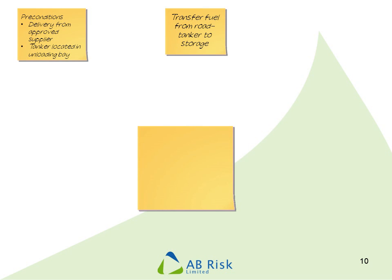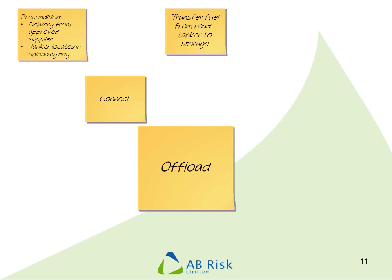Now we've got our task title and our preconditions, it's a good idea to get people into the idea of what we're trying to do with this analysis. What we want are the main activities, not the detail. So we quickly ask the people in the room what the main things are that we have to do. The first thing is to connect up the tanker — bash that down on a post-it. What's the next thing? Once we've connected up, we've got to offload the contents of the tanker — put that down quickly. And after we've offloaded, the next thing to do is disconnect the tanker.